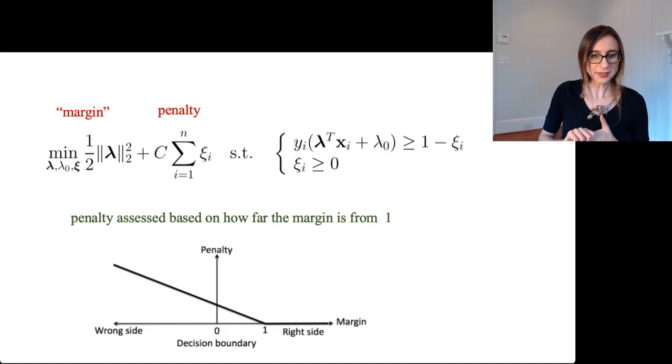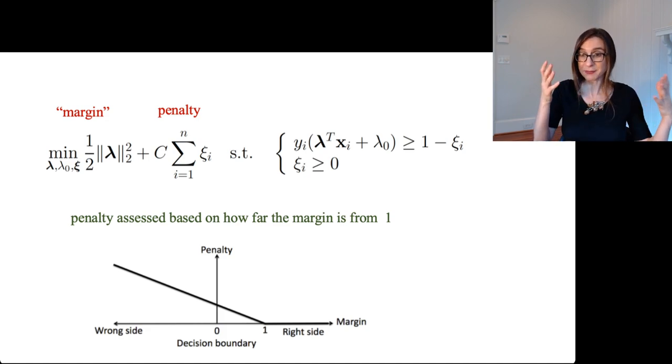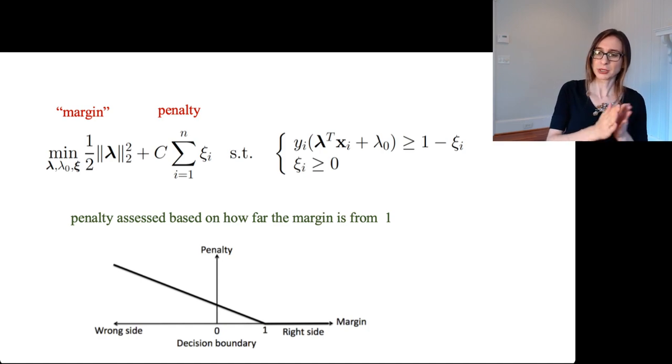Alright, so this is the primal formulation for the non-separable SVM. And there are two terms in the objective. The first one is the same as the margin term. So it says, please keep margins large. And the second term is a penalty term for if you violate that.